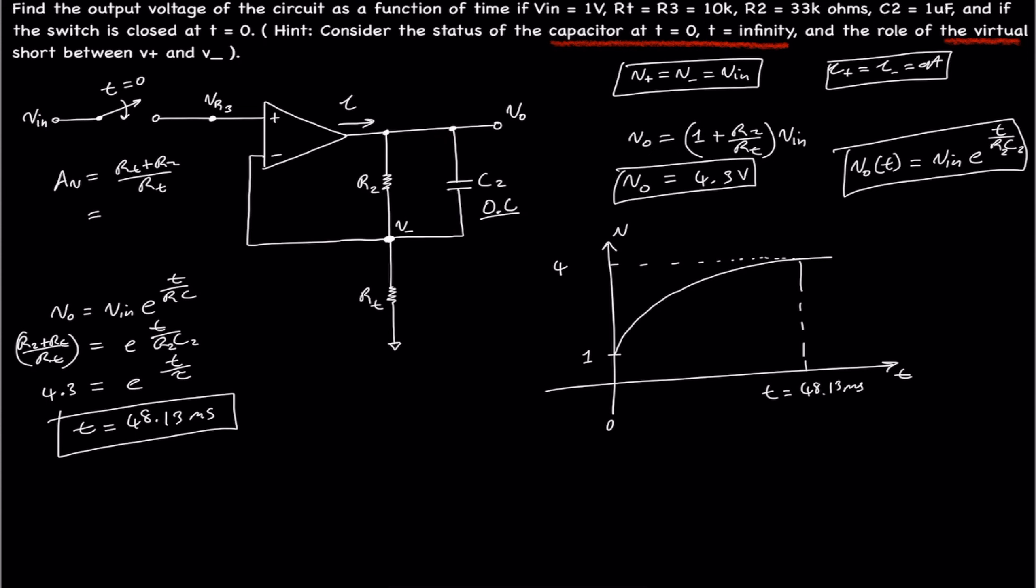The voltage, output voltage is going to be 4.3 volts. And basically, that's it. We don't need anything else. We found the voltage as a function of time. And, what else? We know that at t equals 48.13 milliseconds, the capacitor is going to be fully charged.